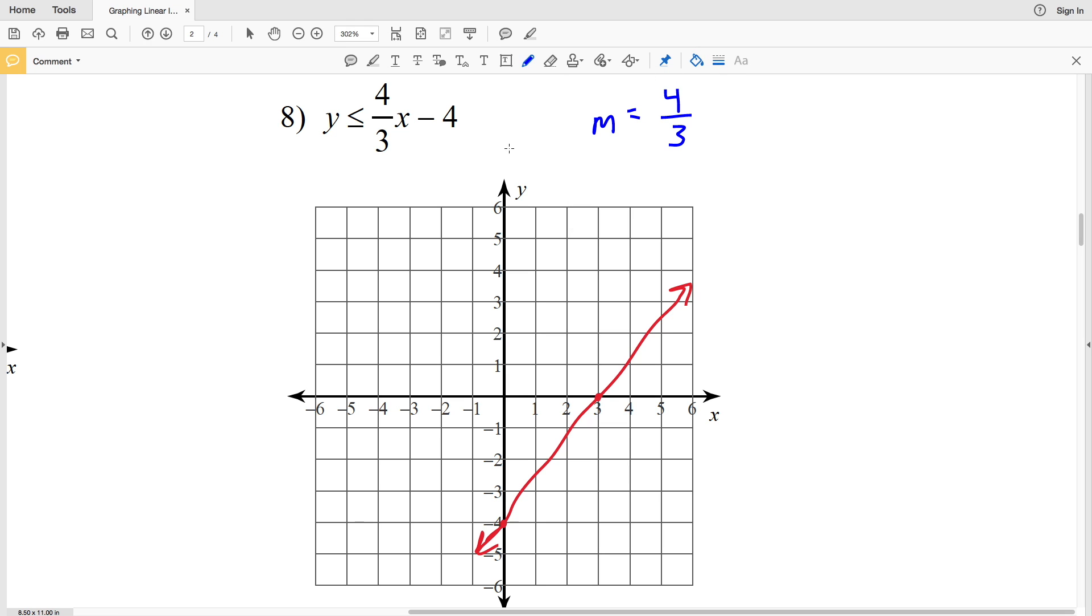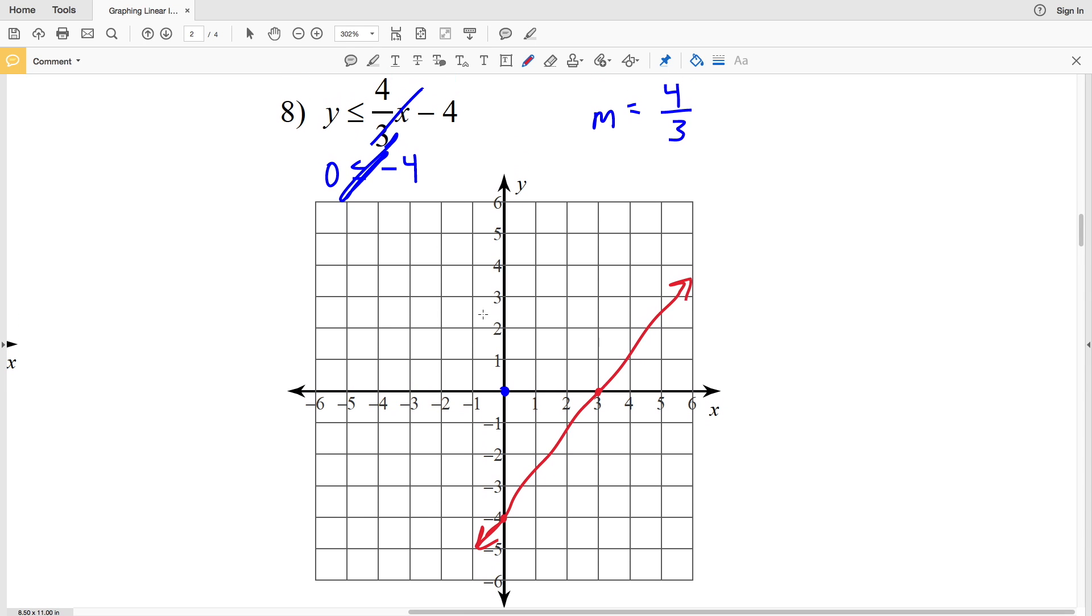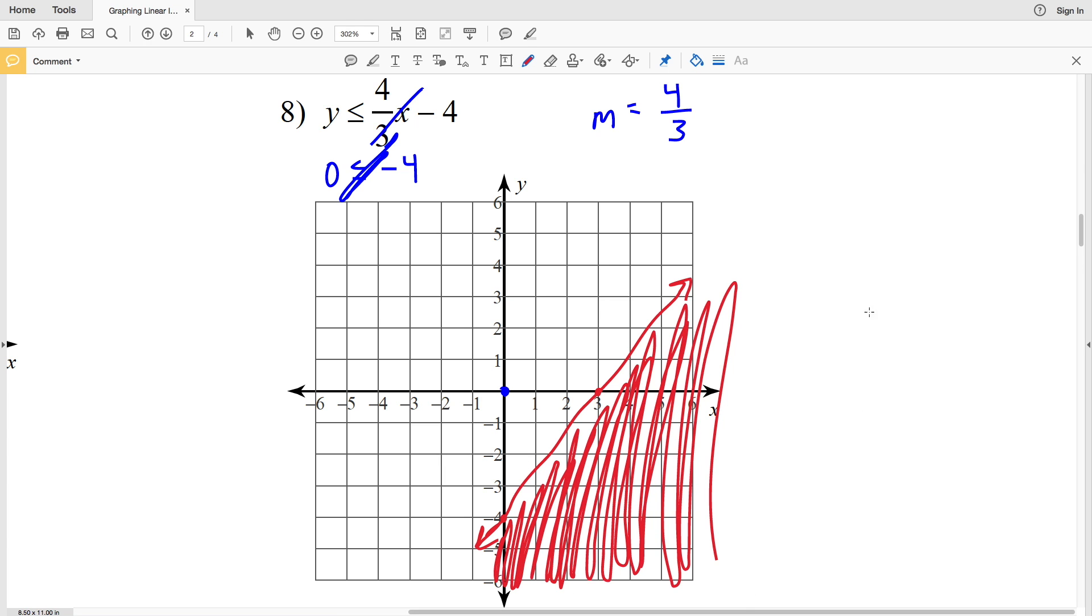Now let's see which way we're going to shade. Let's use our test point of (0, 0). If you plug in 0 for x, that'll be 0, so you'll be left with negative 4. Is 0 less than or equal to negative 4? No, that's not true. So we're not going to shade in including the zero, we're going to shade in the side that does not include zero. So that's everything to the right or below this solid line, and that's the answer to number 8.